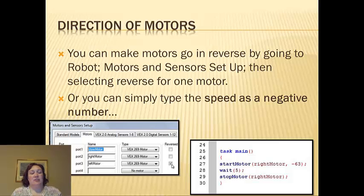The other option is you just type your speed in as a negative number. And here's an example of running your motor in reverse for five seconds. You just make it a negative 63 and it says, oh, once I'm going forward, I'm now going to go backwards at half speed.